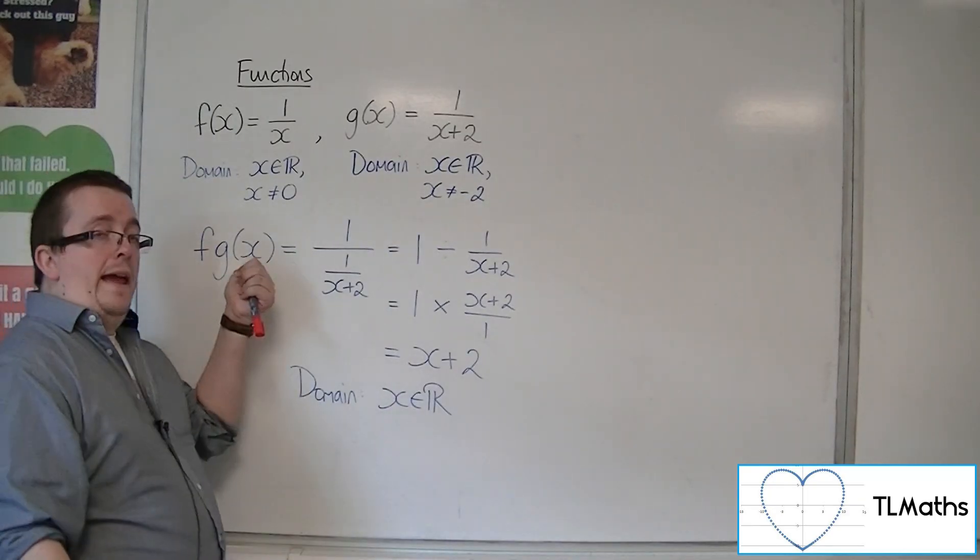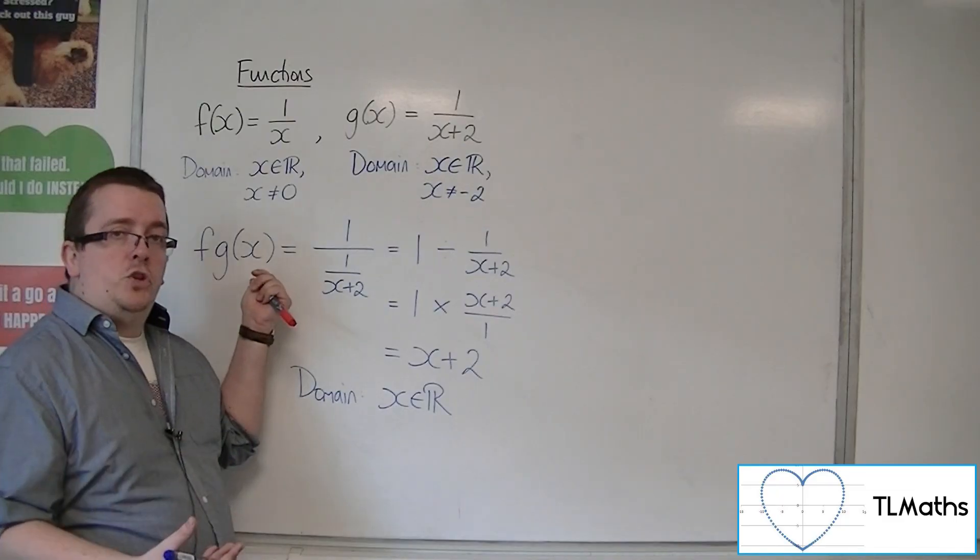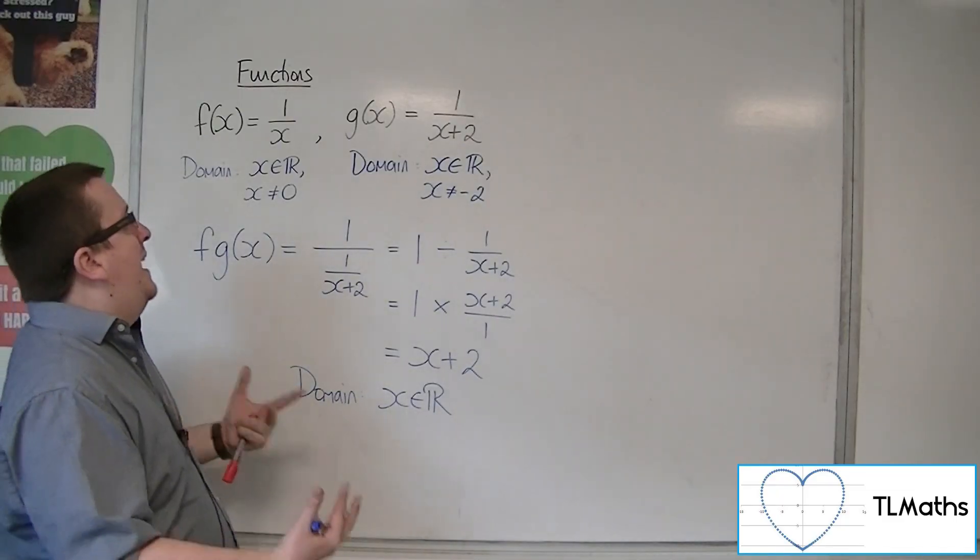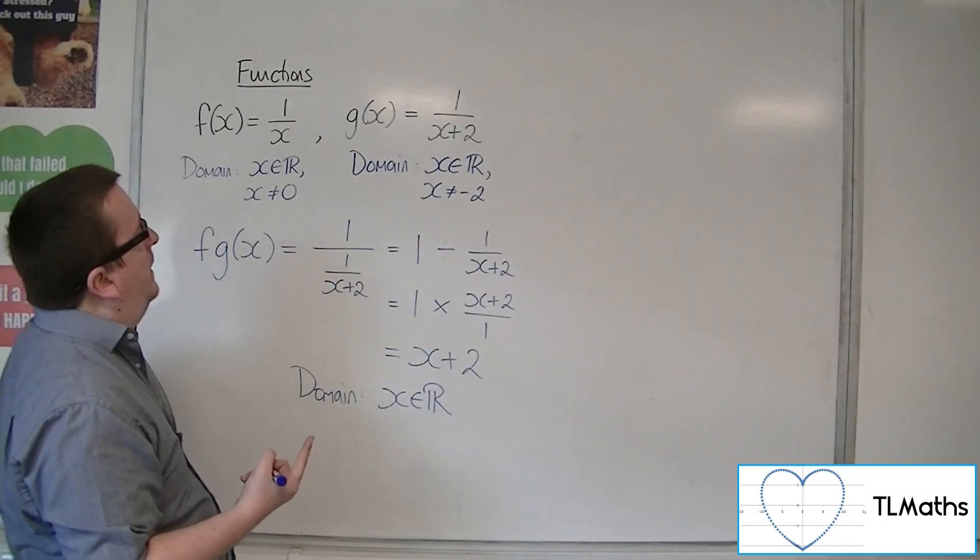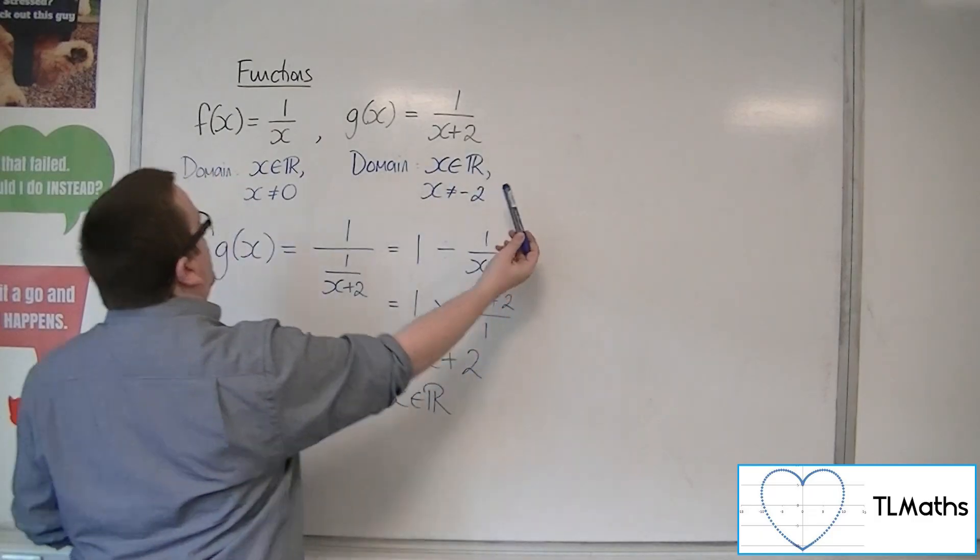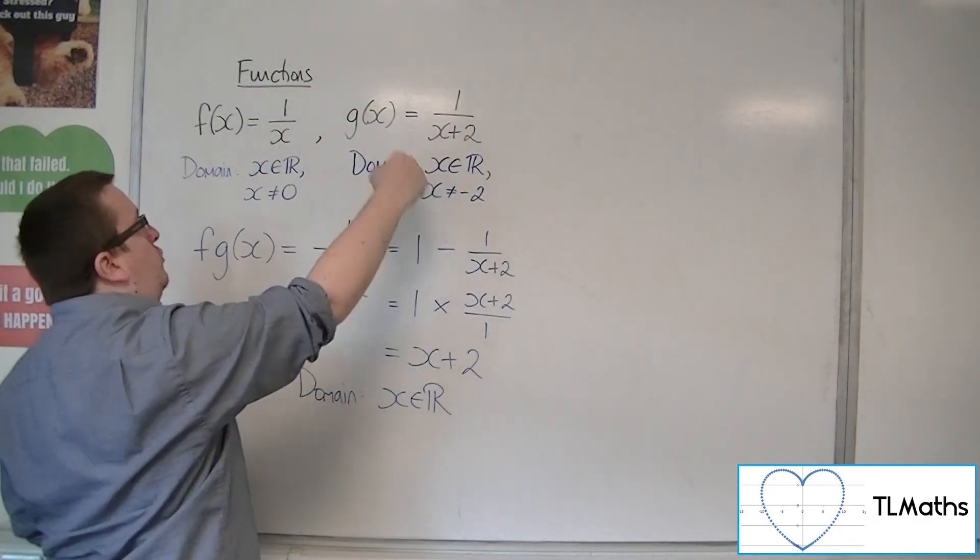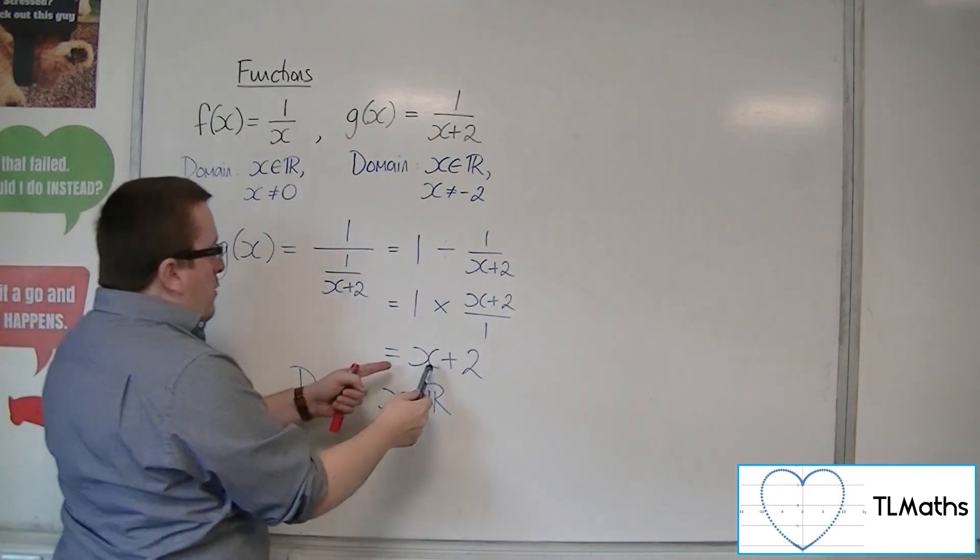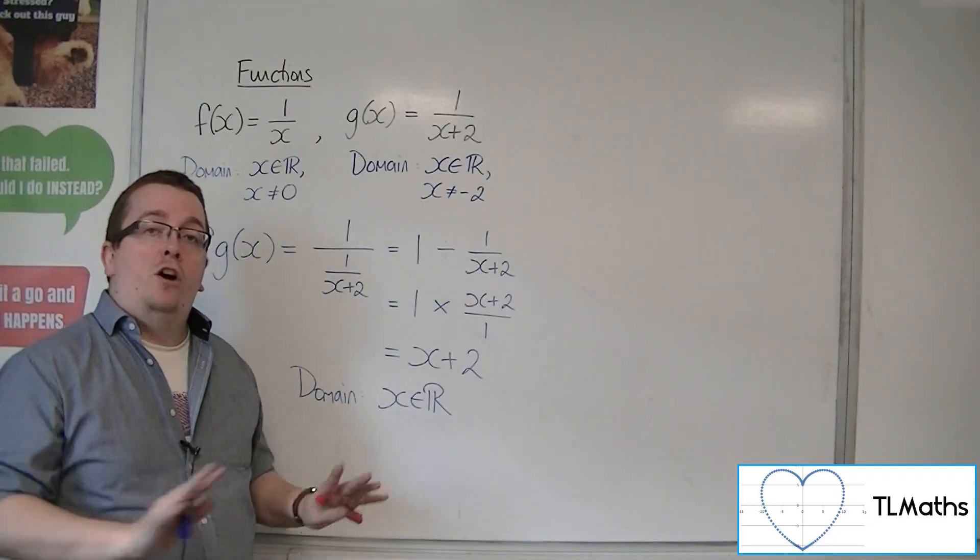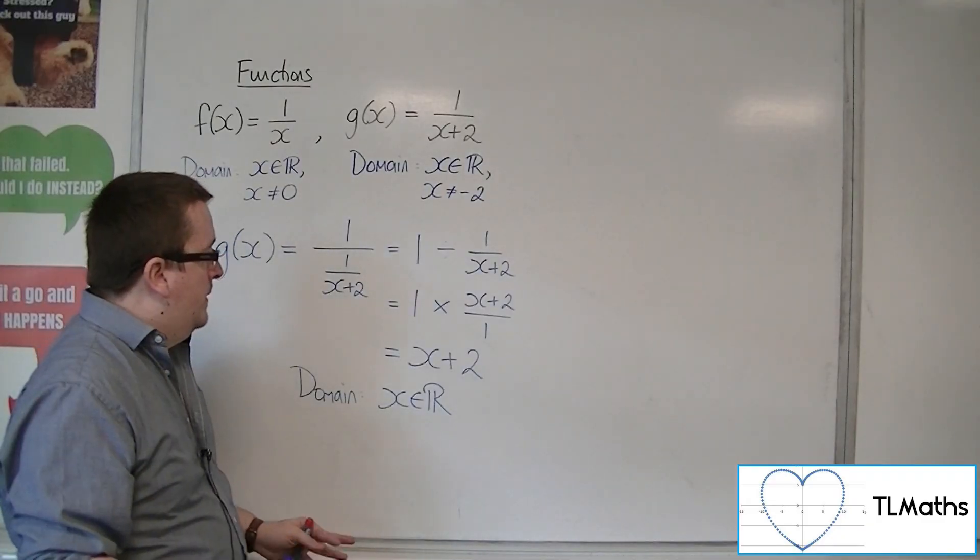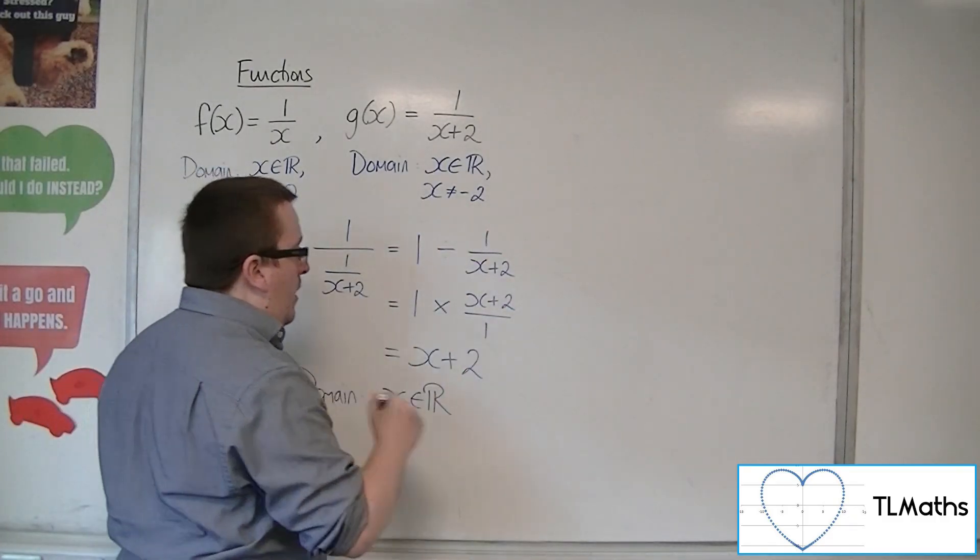Because we're working with f g of x, g of x brought its own baggage, effectively. G of x already had the problem that x couldn't be minus 2. So when g of x got put into f, it carried that restriction with it. And so now, although f g of x looks perfectly fine, as if there are no problems with the domain, it still has this restriction: x cannot be minus 2.